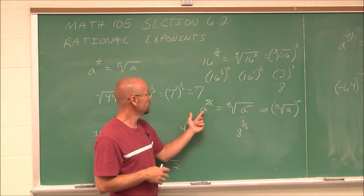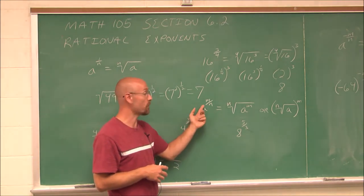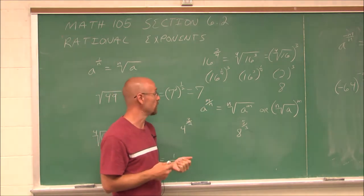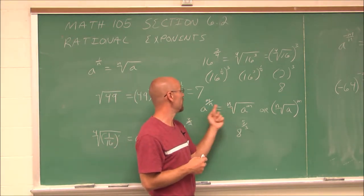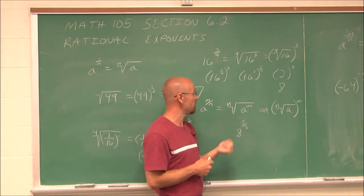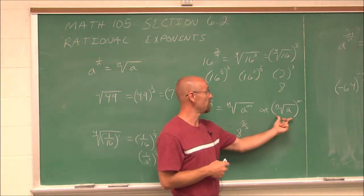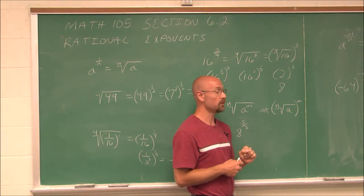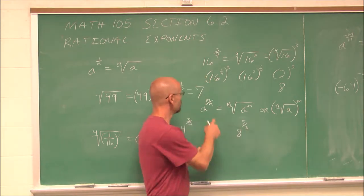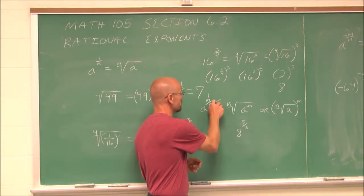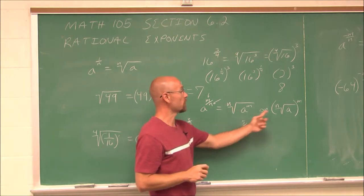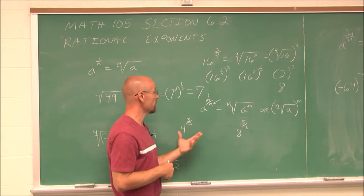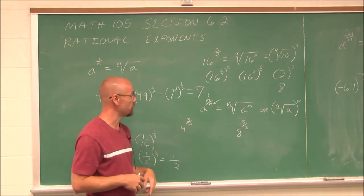So essentially, if we have a fractional exponent a to the m over n, we can write it in one of two ways: we can take the nth root of a to the m power, or — my preferred method — take the nth root of a, then raise it to the m power. The numerator is the power and the denominator is the index. No matter which way you write it, it's really up to you what you prefer.